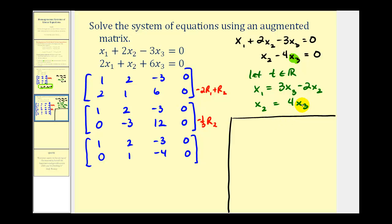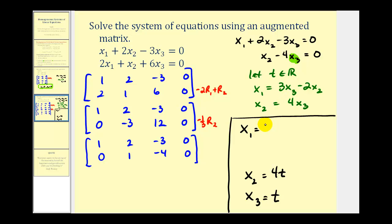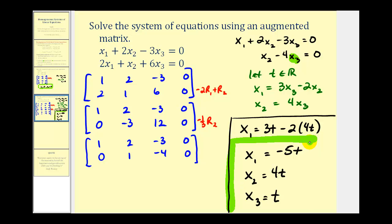Now let's put all these pieces together to represent all of our solutions parametrically. We start by letting x sub three equal t, which means x sub two equals four t. Then x sub one equals three times x sub three, which is three t, minus two times x sub two, which is four t — so x sub one equals three t minus eight t, which is negative five t. This is the parametric representation of the solution to the system of equations that has an infinite number of solutions.